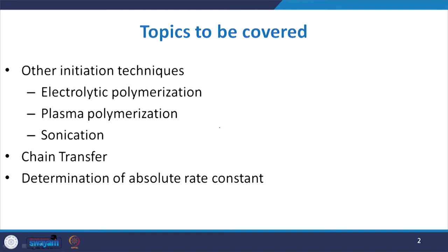In this particular chapter, we are going to discuss the determination of absolute rate constant. This absolute rate constant plays a very vital role in radical chain polymerization. We will discuss the mathematical approach and development of mathematical equations useful for this concept.